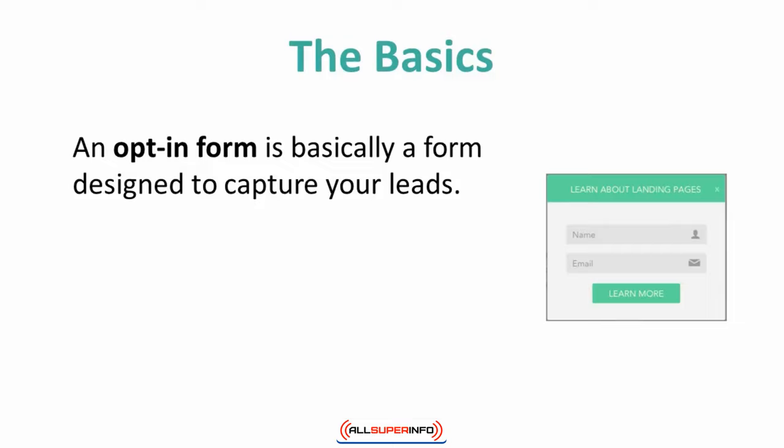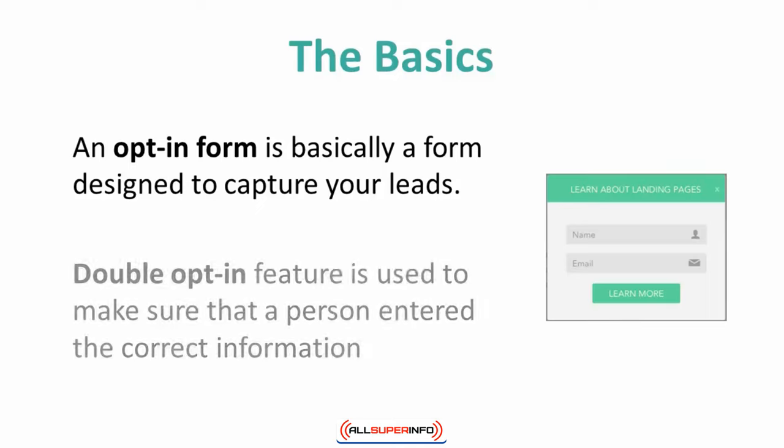When a user fills out your form and decides to opt-in, they are giving you permission to send emails to them. Some autoresponders will provide what is known as a double opt-in, in which a user will receive a confirmation email to make sure that you have the correct information.